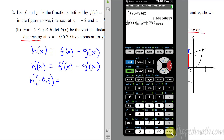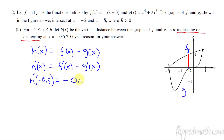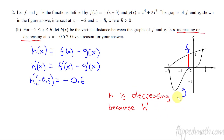If I do all that, the calculator spits out approximately negative 0.6 (there is a small rounding error). So we round that and get negative 0.6. So what does that tell us? H is decreasing. We can say H is decreasing at x equals negative 0.5 because H prime of negative 0.5 is negative — less than zero.